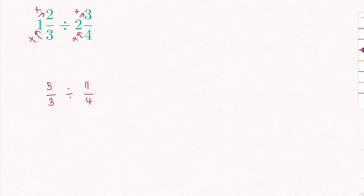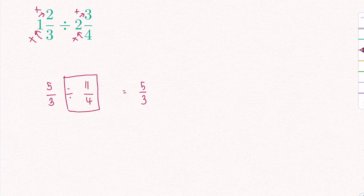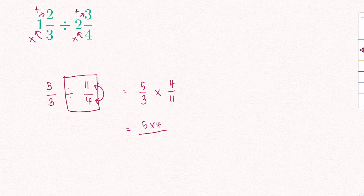Keeping my first fraction 5 over 3 as it is, I know I need to multiply by the reciprocal of my second fraction. Write the times sign, then find the reciprocal of 11 over 4 by inversing it — 4 on top and 11 on the bottom. Now I have 5 over 3 times 4 over 11. I times the numerators together: 5 times 4 equals 20. And the denominators: 3 times 11 equals 33.